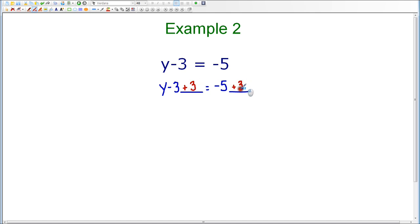And this works because I know that if I take negative 3 plus 3, I end up with 0. Therefore, I am only left with y on the left-hand side. So I have y equals, and now I need to compute negative 5 plus 3, which is negative 2. So I end up with an answer of y equals negative 2.